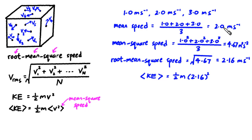If you had used the mean speed instead, so if you have used 2.0 instead of 2.16, you get a different value. And that value does not correspond to the average KE. It's as simple as that. Okay, ta-ta, I'll see you next time.